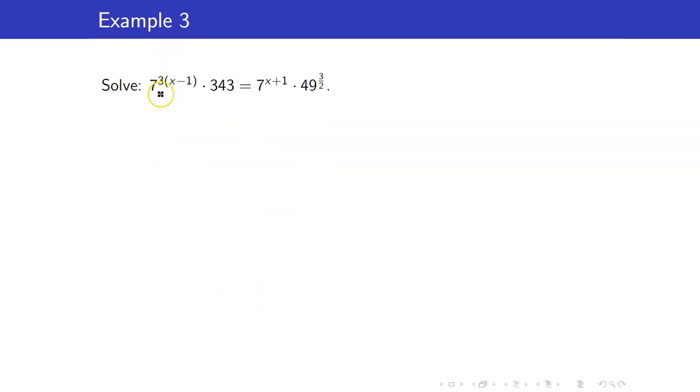Next, this involves a lot of numbers, but don't be scared. Look at the numbers 7, 343, and 49. Since you have a base of 7 here, and 49 is 7 squared, you already have an idea that 343 is a power of 7 as well. Verify that 343 is 7 cubed.